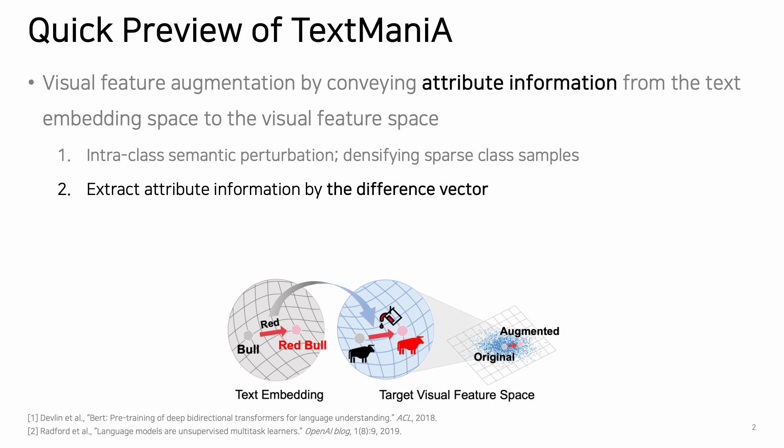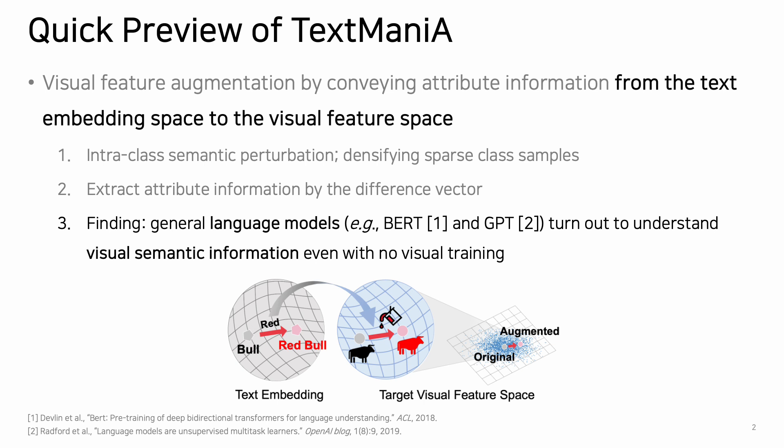Second, we use attribute information such as color or size. This information is extracted by simple subtraction in the text embedding space. For example, the red attribute is extracted by 'red ball' minus 'ball', and we call it a difference vector. Last but not least, we transfer the difference vector from the text embedding space to the visual feature space. This is based on the finding that general language models such as BERT and GPT can understand visual semantic information, and are effective for augmenting visual features even though they have not been exposed to visual information.